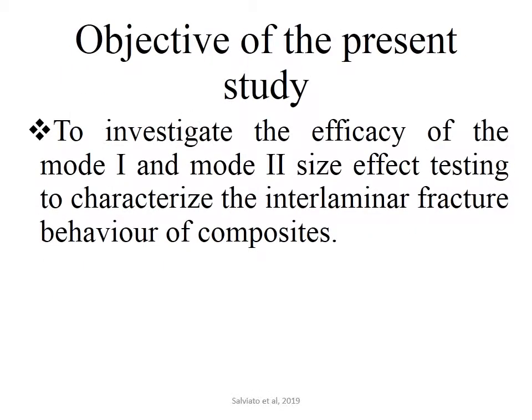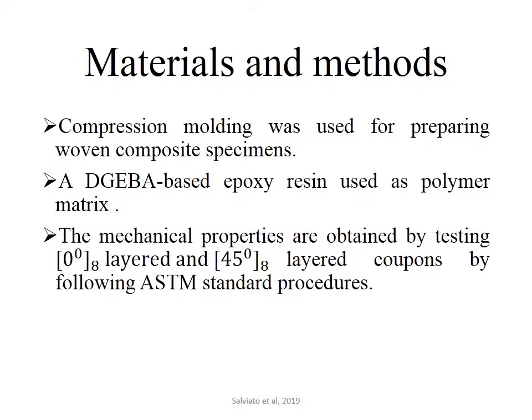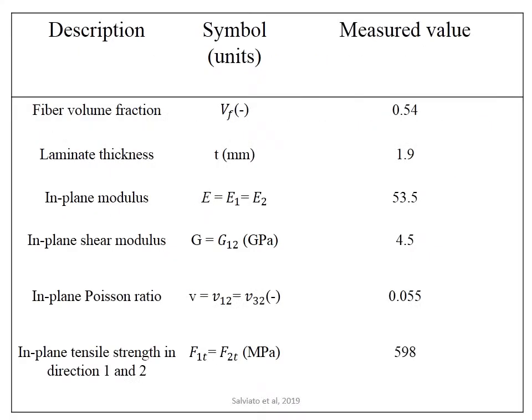This is the object of the presentation. Moving to materials and methods: they prepared samples by using compression molding. A DGEBA-based epoxy resin was used as the polymer matrix and carbon fiber was used as the reinforcing material. The mechanical properties are obtained by testing 0-degree and 45-degree 8-layer properties of carbon epoxy.